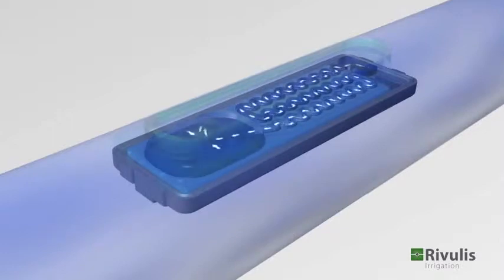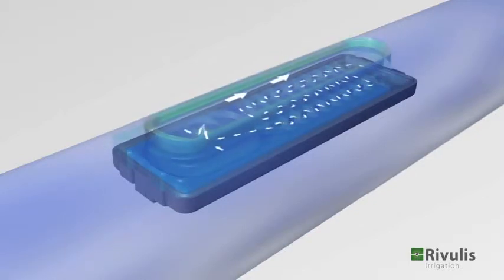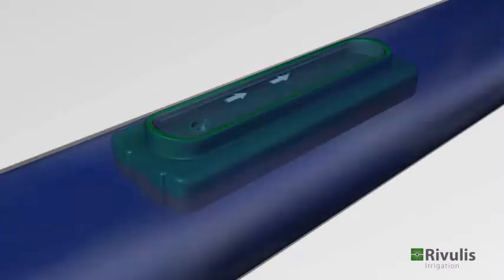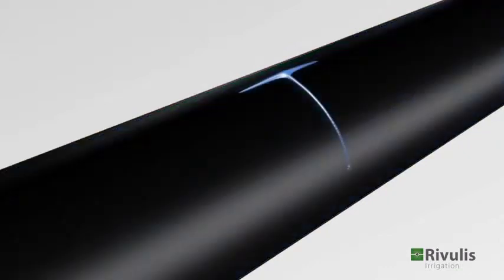It then continues through the regulating chamber, which ensures that the water maintains a constant flow rate over a wide range of pressures. Only then does the water pass through the outlet chamber and drips out to irrigate your plants.